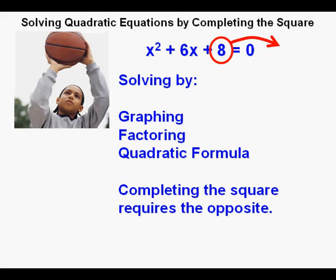Completing the square requires just the opposite: move the C, or constant term, by itself to the other side of the equal sign. That constant, for instance, on the left side of the equation would be moved over to the right side of the equation.